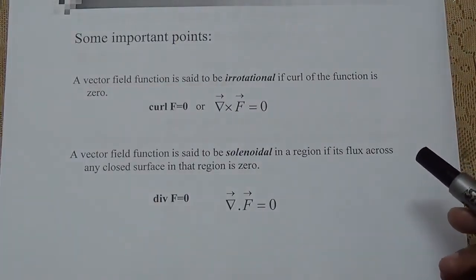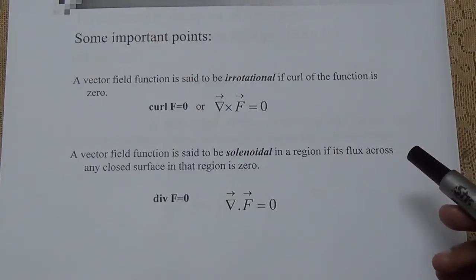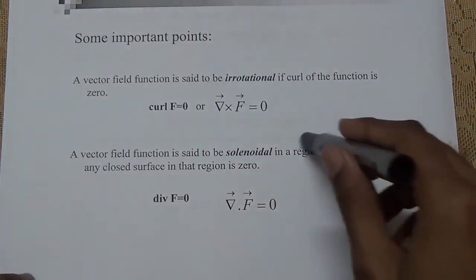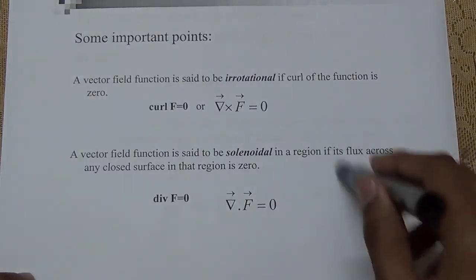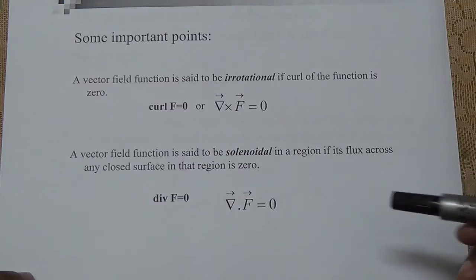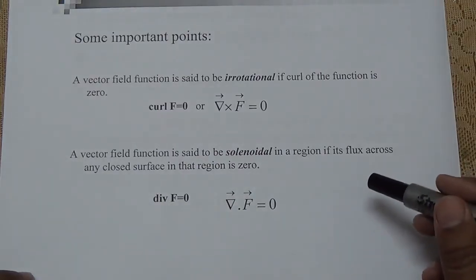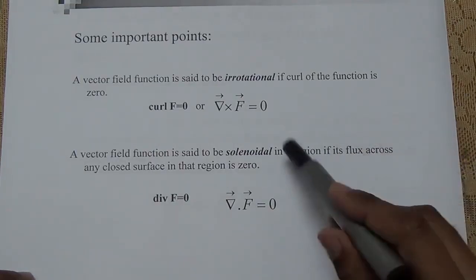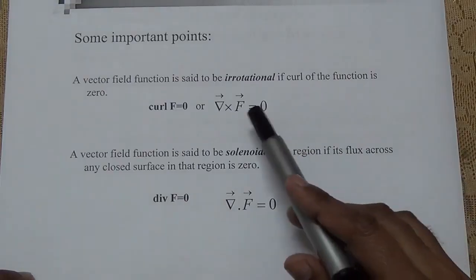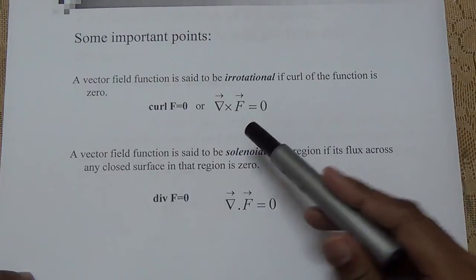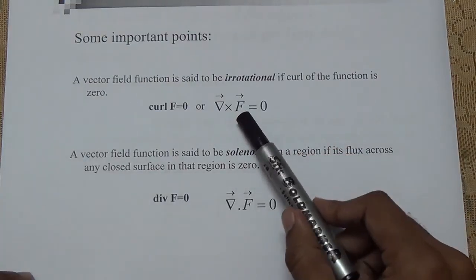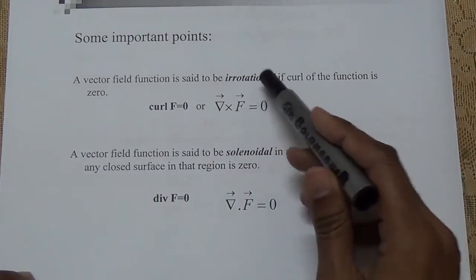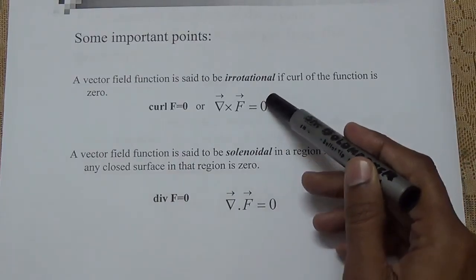There are two important points. First: when curl F equals zero, that means there is no rotation. In the case of a hurricane-type rotation we have seen rotating fields, and in the case of magnetic field lines around Ampere's law we saw rotation. So when there is no rotation, del cross F is equal to zero. This field function is then said to be irrotational — when this result equals zero, it means there is no rotational field.